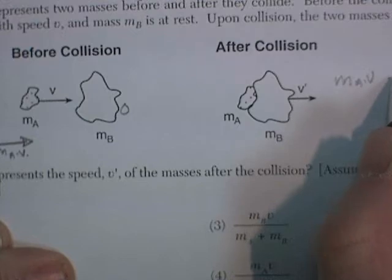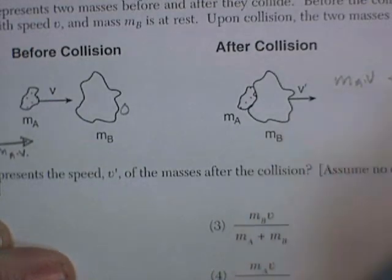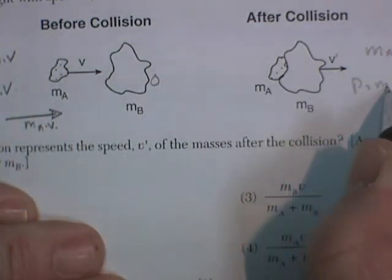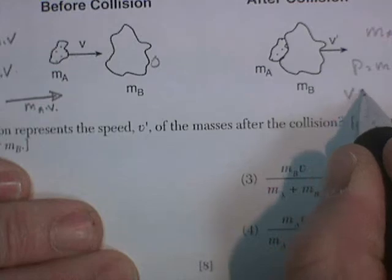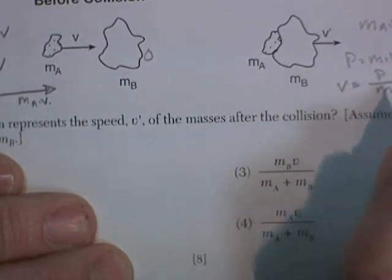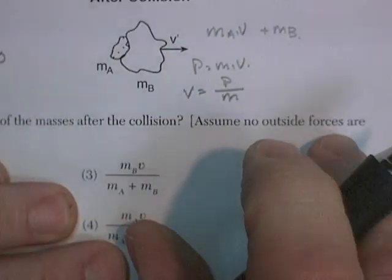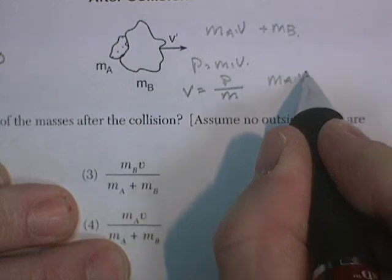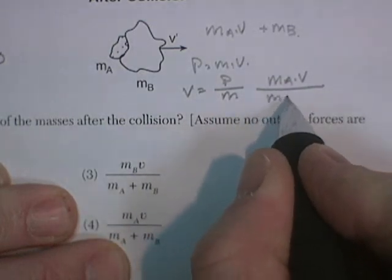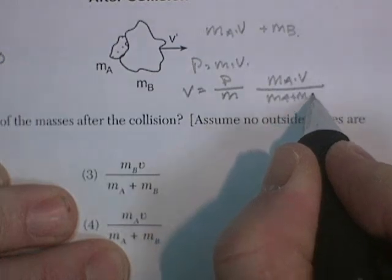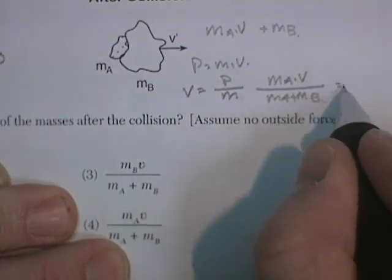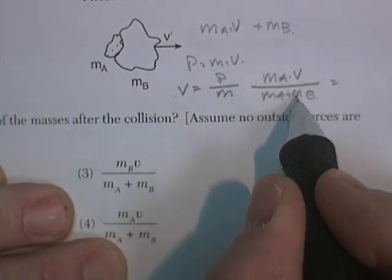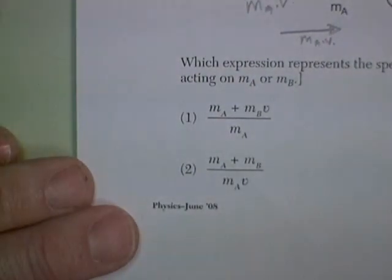The momentum afterwards is going to be mass A times velocity, but we have to add mass B to the total mass. So if momentum is mass A times velocity, then velocity equals momentum divided by mass. The mass afterward is mass A plus mass B, so the velocity afterwards has to be equal to mass A times V divided by mass A plus B.